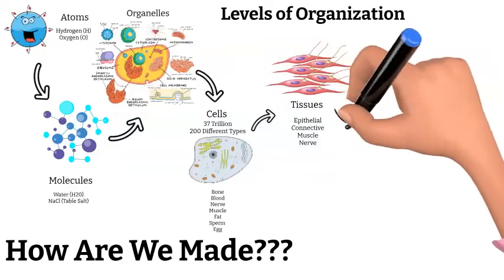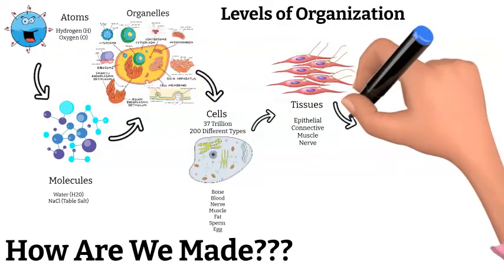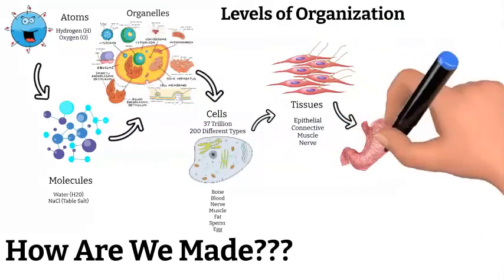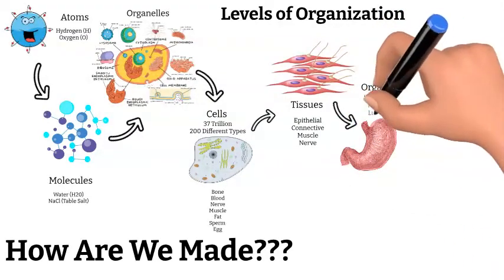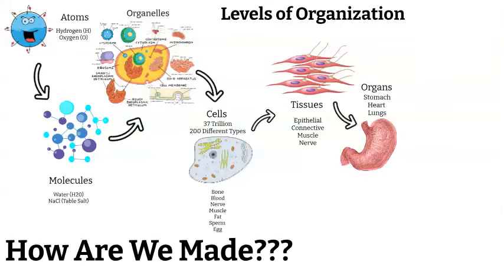When groups of tissues get together, they form the next level, which are organs. Organs include the stomach, heart, and lungs. Most of our organs are made up of all four tissue types, and they're designed to perform specific functions. For example, the stomach is an organ whose special function is to break down the food we eat.